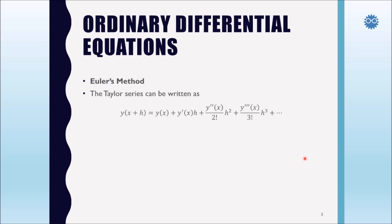Let's see how to derive Euler's method according to Taylor's series. This is the Taylor series expansion of y of x plus h. We have here y of x, which is the value of the function at the current point, the first derivative of x multiplied by h, the second derivative over factorial 2 multiplied by h squared, and so on.